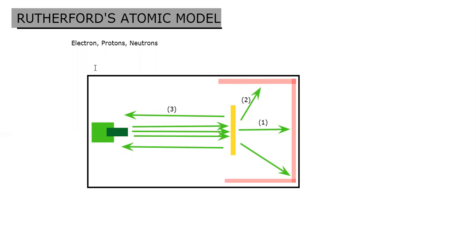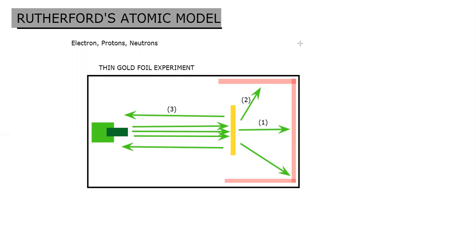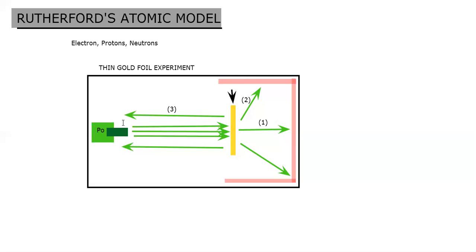Rutherford performed the thin gold foil experiment. The experimental setup had a radioactive element called polonium, which emits alpha rays. These alpha rays were directed to emit out toward the gold foil in the experimental setup.